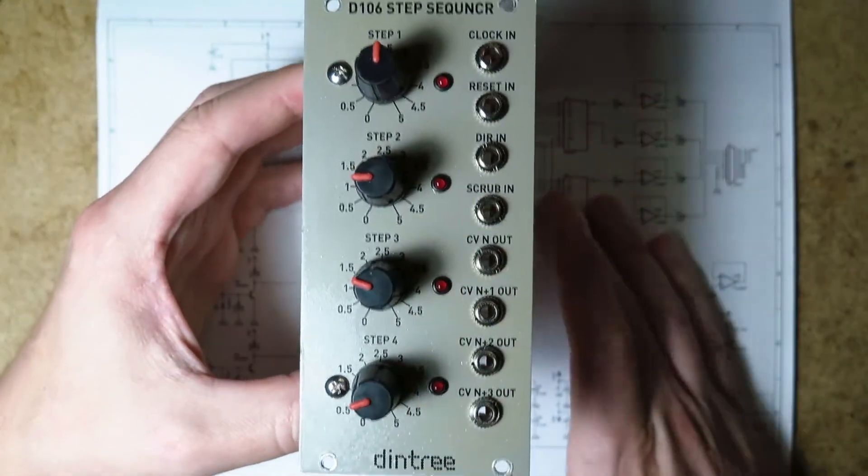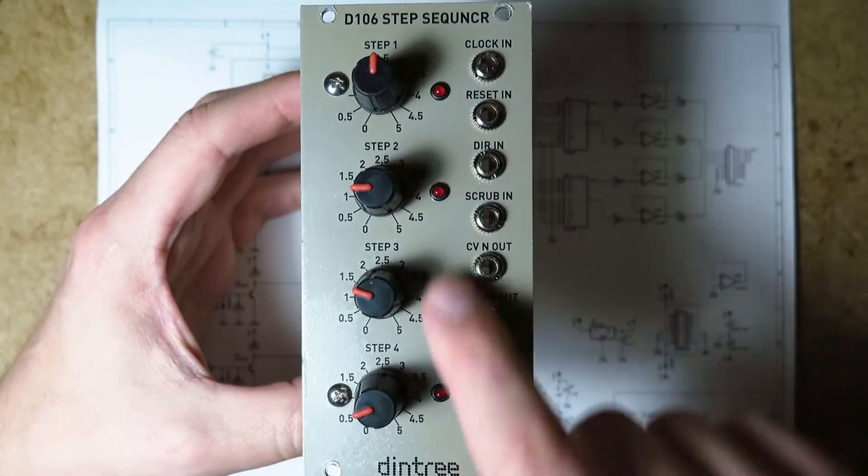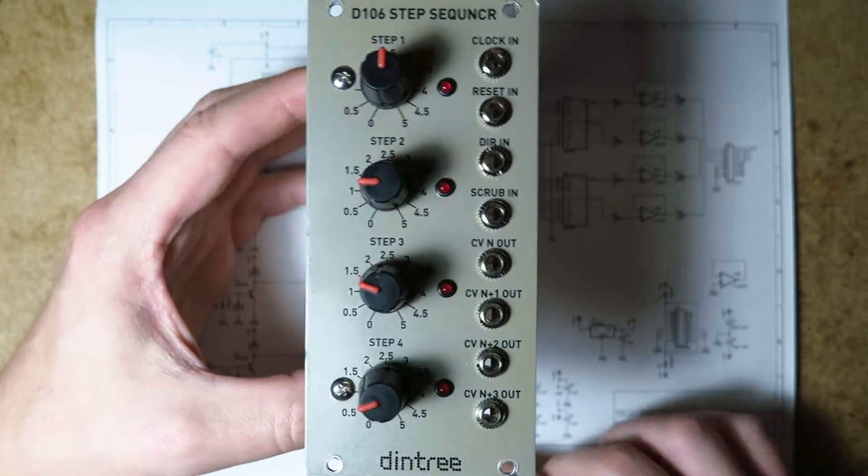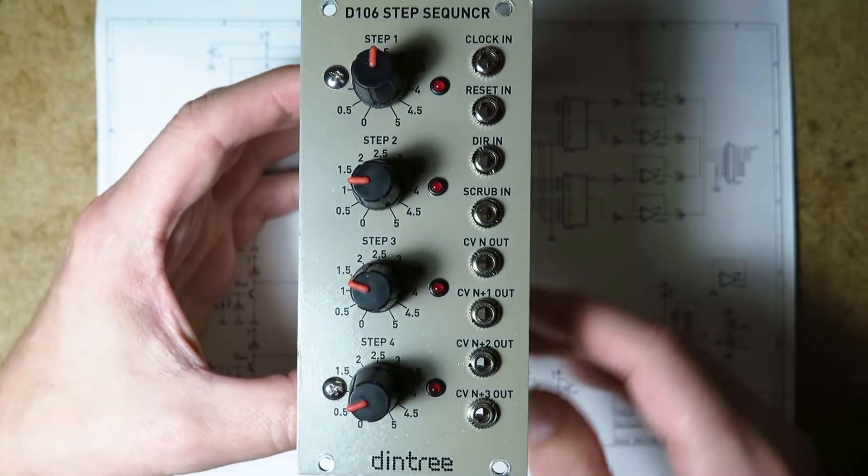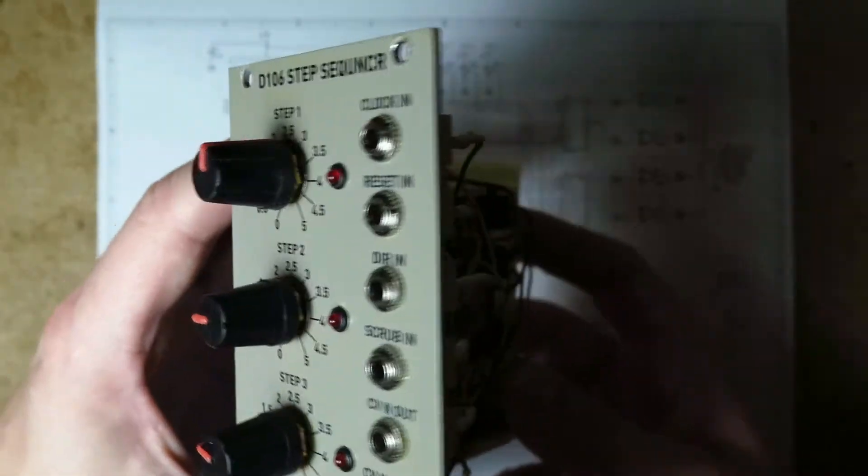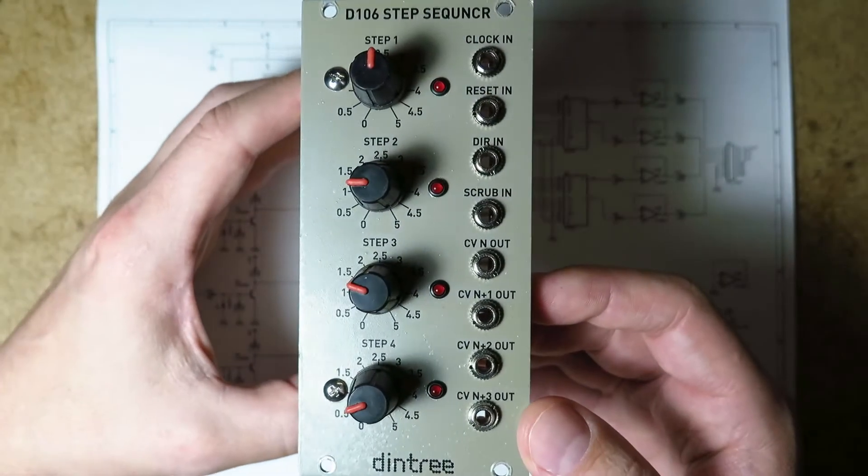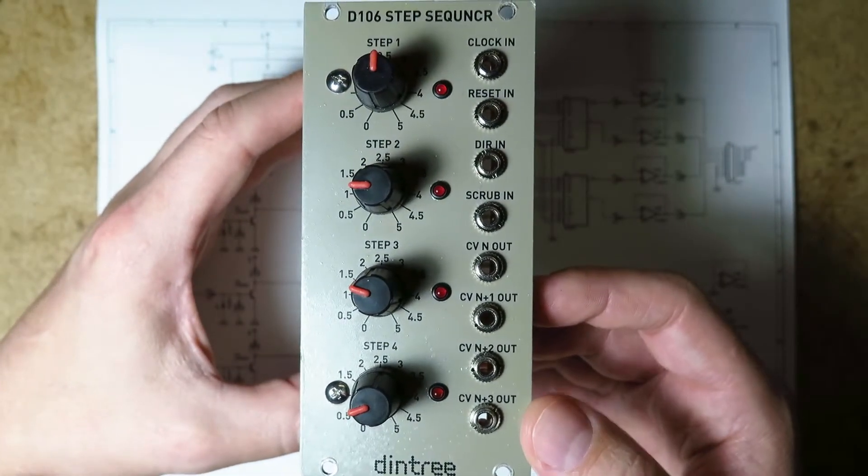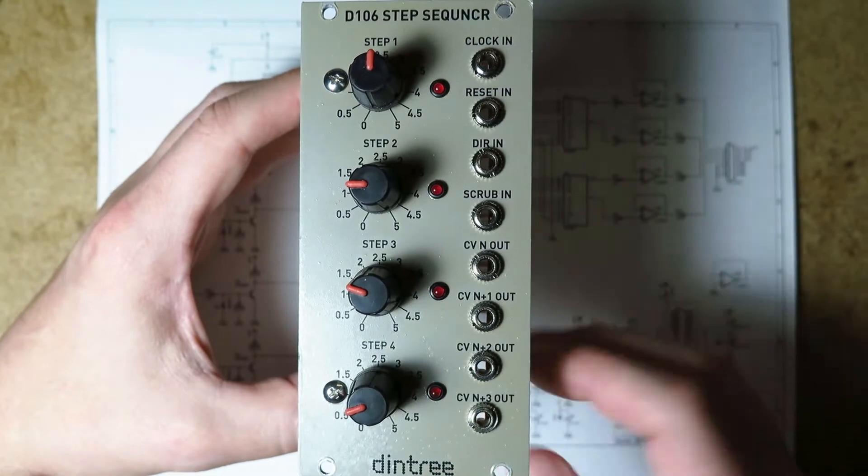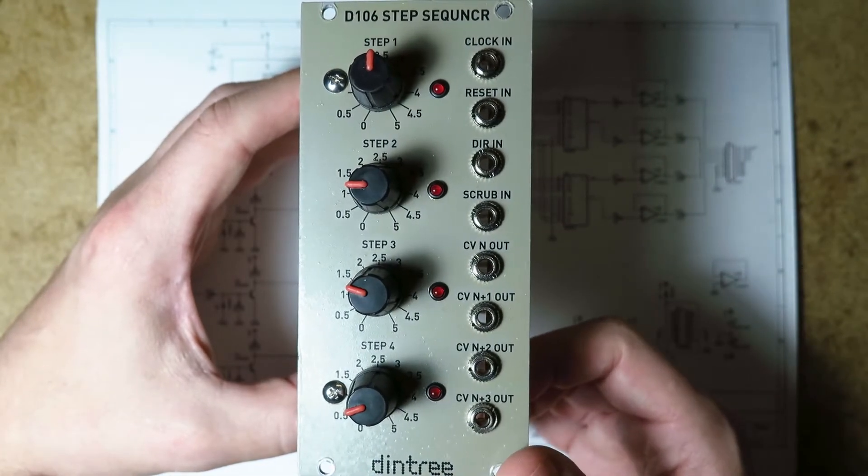You can make these panels yourself on a drill press with a template, which you can easily make in lots of cheap or free software. So, let me just explain how this sequencer works, and then I'll go through the schematic and you can learn a little bit about how the circuitry works.